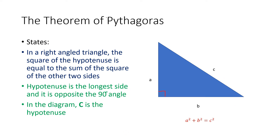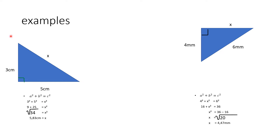Now, an example. I have a right angle triangle here. My unknown side X also happens to be my hypotenuse. The other two sides are 3 centimeters and 5 centimeters.